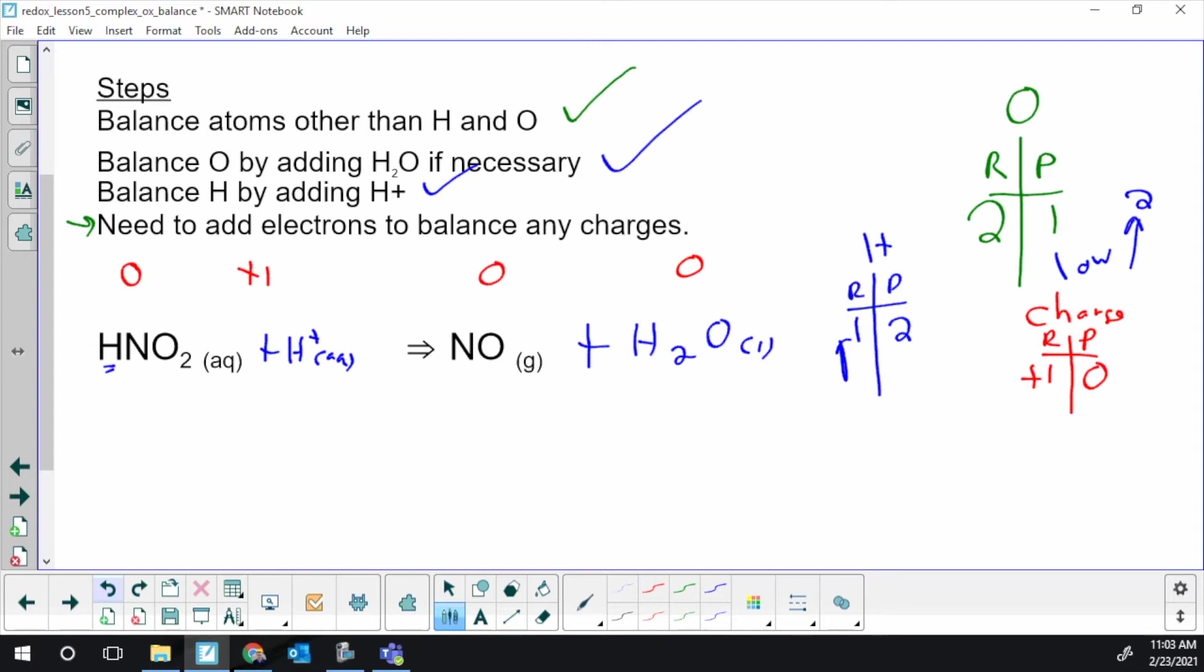Electrons are negative, so we're going to drive something down. I can't add to the low side; I'd never bring it to the high side. You always add electrons to the high side. Even if you had -2 and -3, you'd still add to the high side, which would be -2. So add to the high side and bring it down.